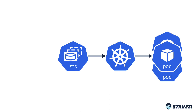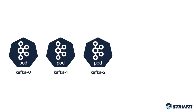But StatefulSets have also some limitations. When Strimzi deploys the Kafka cluster, each pod will represent one Kafka broker, and the sequence numbers from the pod names will be used as the broker IDs. So a three-node Kafka cluster will always have Kafka brokers with ID 0, 1, and 2.